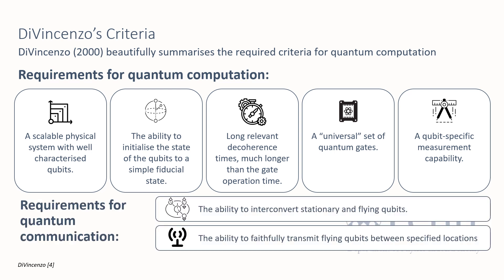There are two additional requirements for quantum communication: the ability to interconvert stationary and flying qubits, and the ability to faithfully transmit flying qubits between specified locations.